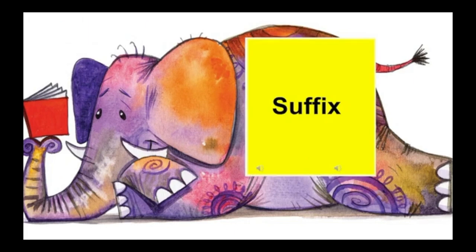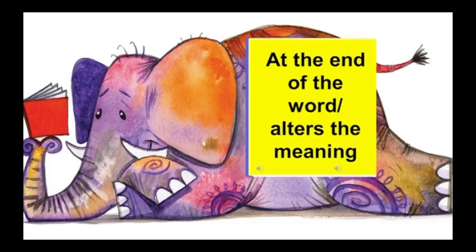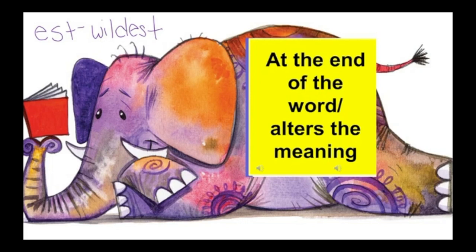Next, we'll do a review of what suffixes are. A suffix comes at the end of a word and alters the meaning of the word. An example of a suffix we've talked about would be E-S-T — for instance, the word wildest. That's what we use when we're comparing more than two things and talking about when something is the most of something.